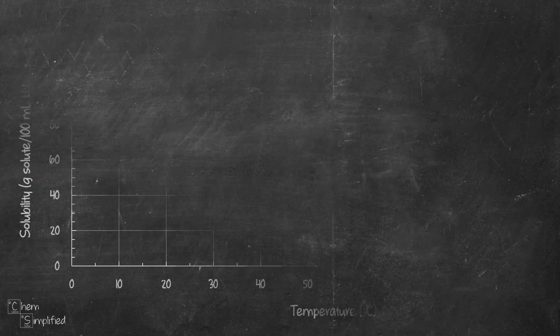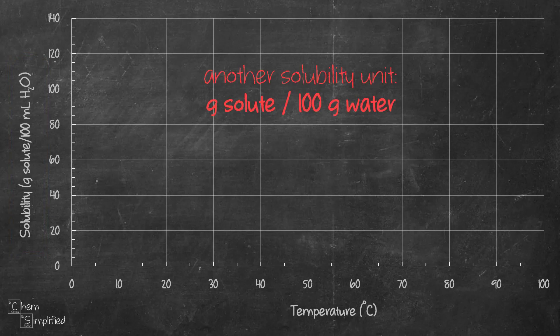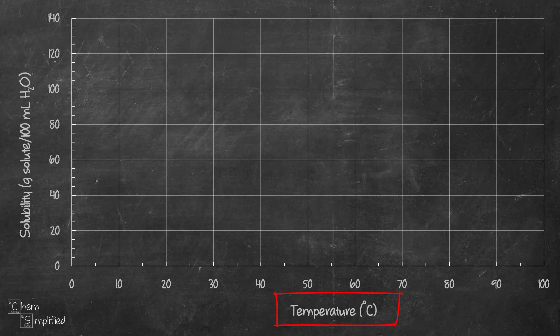The graph has the y-axis showing solubility, with units typically in grams of solute per 100 ml of H2O. Sometimes you may come across a solubility curve where the y-axis unit is grams of solute per 100 grams of H2O — it depends on how the solvent was measured. Usually we determine solubility in water because water is a universal solvent, though you can generate a solubility curve for other solvents as well. On the x-axis is temperature in degrees Celsius.